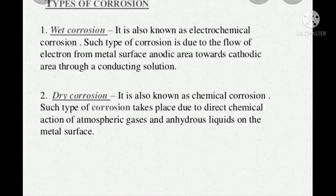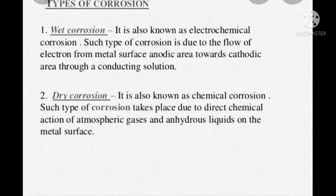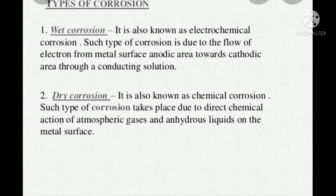Dry corrosion is mainly caused by the attack of chemicals on the metal — corrosive liquids or gases such as oxygen, nitrogen, sulfur dioxide, and hydrogen sulfide. This reaction occurs at high temperature. For example, a silver spoon after a few days becomes tarnished due to the attack of these chemicals. Copper, after a few days, produces a green color due to rust formation. So corrosion may occur due to exposure to air and water, or due to chemical substances — corrosive liquids or gases. These are the two types of corrosion: dry (chemical/absence of moisture) and wet (presence of moisture).